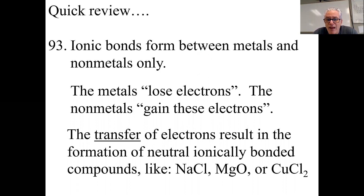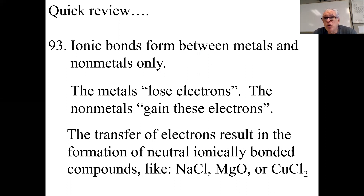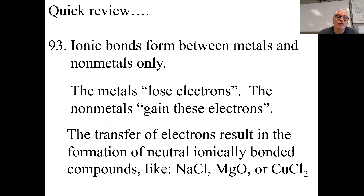Positive two and negative one don't balance in a one-to-one ratio, so we have to have a formula that's not one to one. In this case it's going to be one to two. The positive two copper ion bonds with two negative one chloride anions. Ionic bonds: metals and non-metals, transfer of electrons.